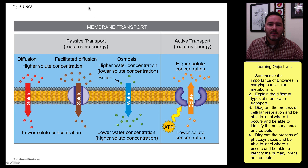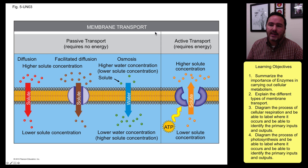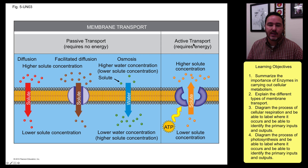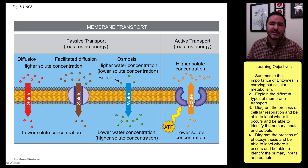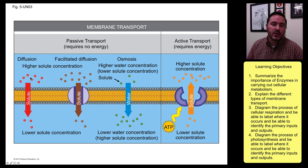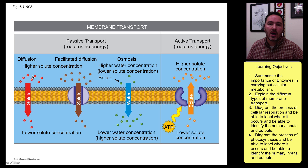Another thing I want to talk about is membrane transport. In membrane transport, we have two main types: passive transport, which requires no energy, and active transport, which requires energy. In passive transport, there are three types. The first is called diffusion, where molecules move from higher concentrations to lower concentrations. They freely move right across the membrane — the membrane is not a barrier to these types of molecules.